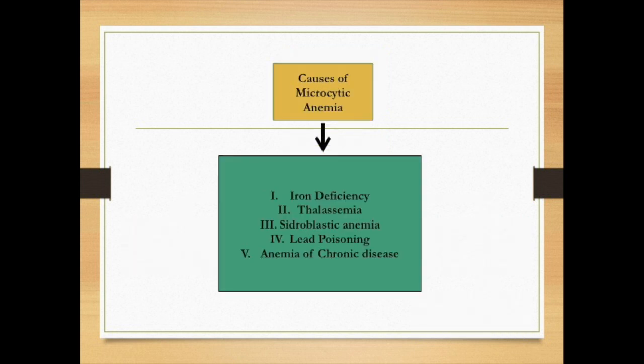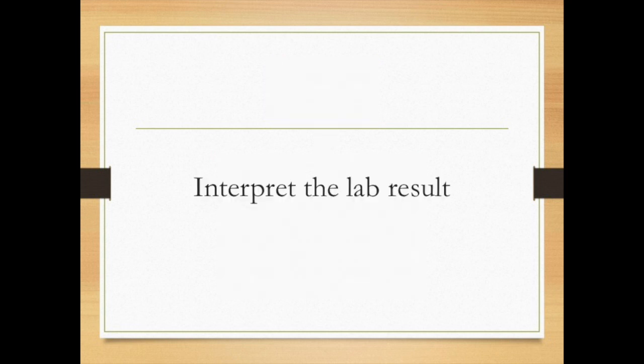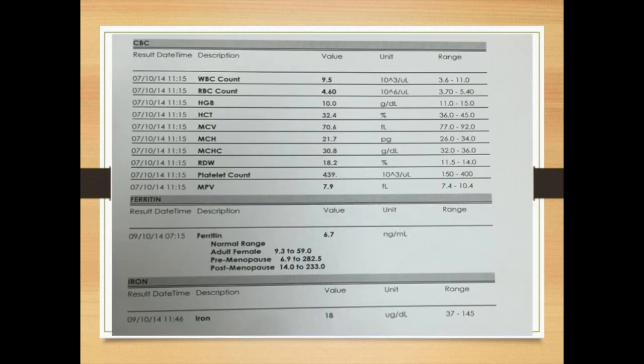The causes of microcytic anemia are iron deficiency, thalassemia, sideroblastic anemia, lead poisoning, and anemia of chronic disease. Today we will focus only on iron deficiency anemia, so let's interpret the lab results.